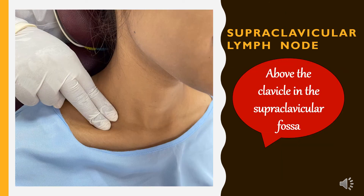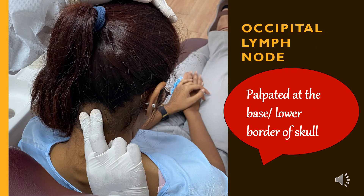The following is supraclavicular limb node. It is located above the clavicle in the supraclavicular fossa. The last limb node to be palpated is occipital limb node. These are palpated at the base or lower border of skull.